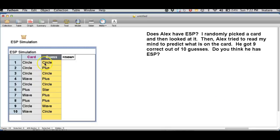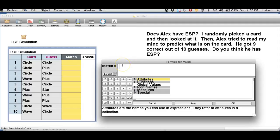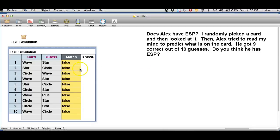Notice sometimes there's a match and sometimes there's not. Let's create a new attribute in Fathom to keep track of whether or not there is a match. I'm going to edit the formula for this attribute and I want to know when card and guess are equal. Notice we have a bunch of trues and falses and look at this, there was no matches here. And now we have some trues so we had some matches.